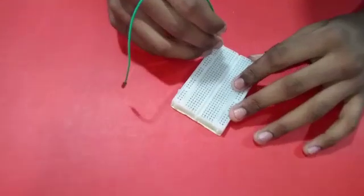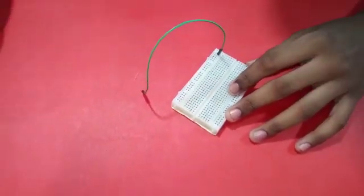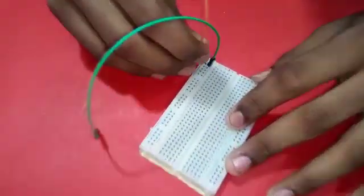First, take one jumper wire and connect it with a breadboard positive and another jumper wire in negative.